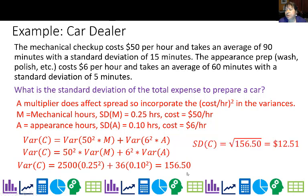Take the square root of that for standard deviation. Alternatively, you could calculate new standard deviations first: 50(0.25) = 12.5 and 6(0.1) = 0.6, then square them and add: (12.5)² + (0.6)² = 156.5, then square root. There are two ways to tackle this—use variances directly remembering they're squared, or calculate new standard deviations first, then square and add like the Pythagorean theorem. Use whichever you're comfortable with.